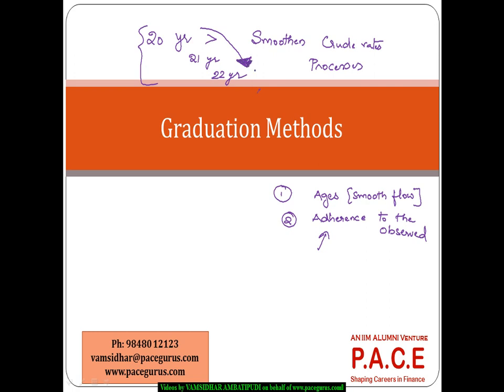That is where we use smoothening mechanisms, or graduation tools and techniques, to bring out that kind of smoothening across the crude mortality rates, while at the same time ensuring adherence to the data. That is one of the main objectives of using graduation in our processes — majorly arriving at a compromise.